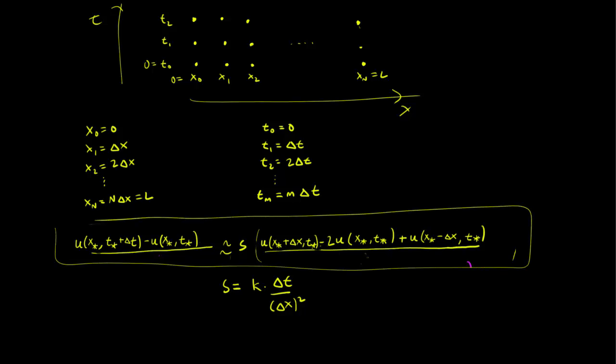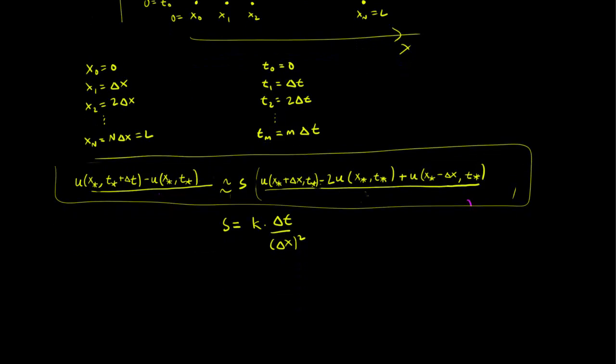And let's make another notational change. So let u tilde be a solution to the approximate equation. And let's apply the notation u_j^m to be the value of the approximate solution at x_j and at t_m. In that case, what would happen is that our approximate equation becomes this.